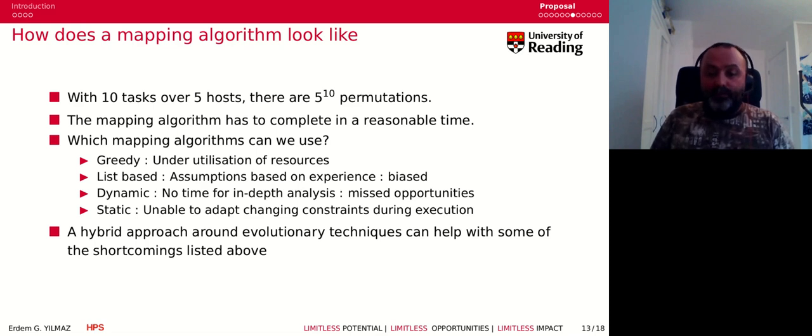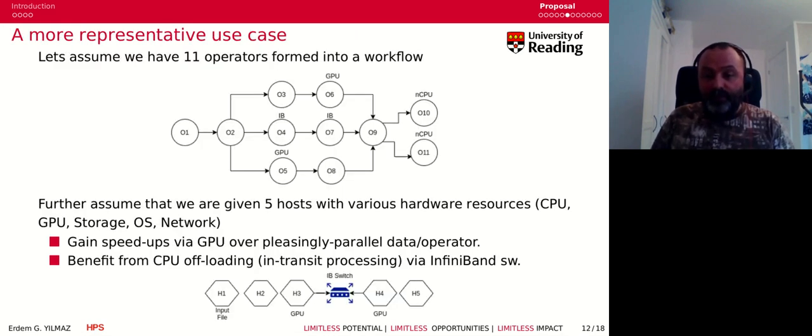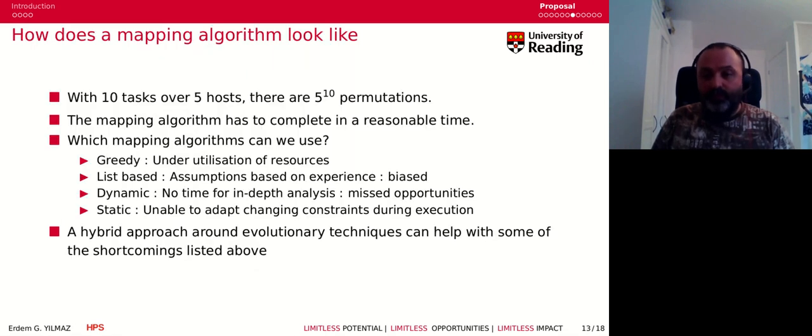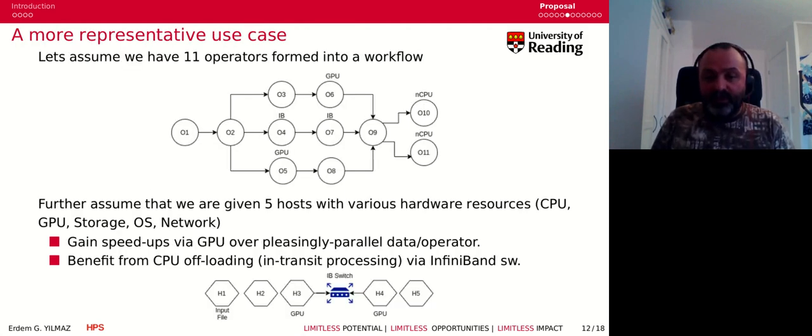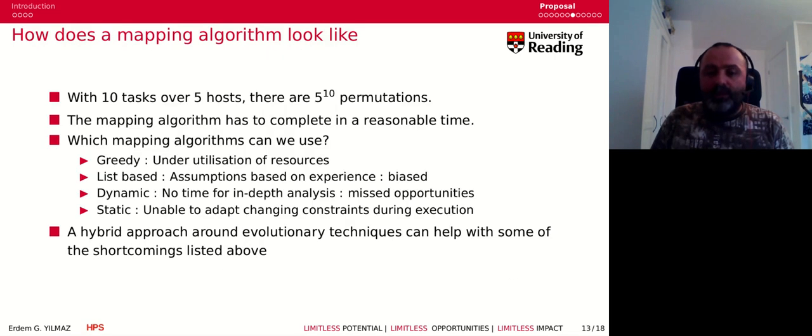How do we do the mapping? We have 11 tasks over five hosts. I said 10 tasks because the first task is the starting point and it's generally tied up to a host for its input dependency. So 10 tasks over five hosts—that's five to the ten permutations. You can't just brute force and rank them, calculate their cost, sort them, and find the optimum solution. Even with 10 tasks to five hosts, it's five to the ten, so it's too much time for a scheduling or mapping algorithm, and it has to complete in a reasonable time, otherwise there is no point of using a mapping algorithm.